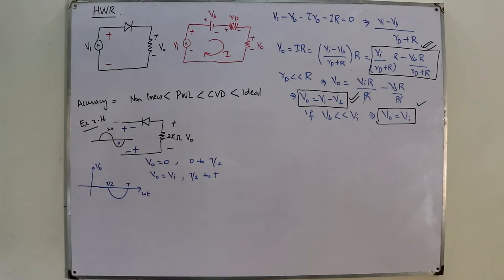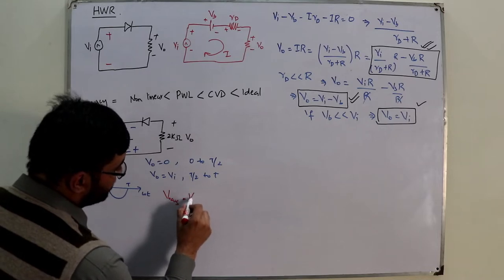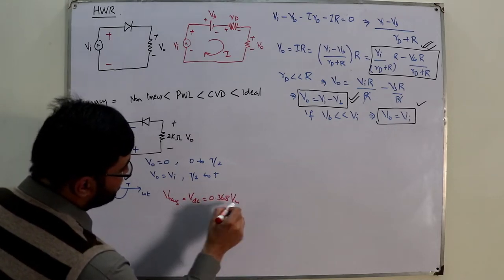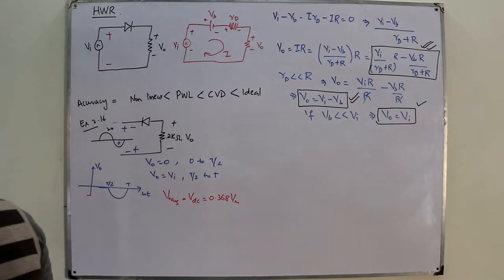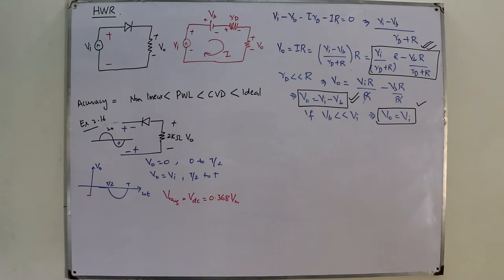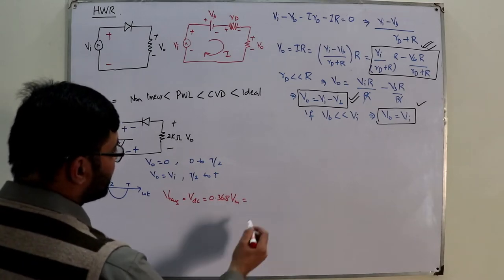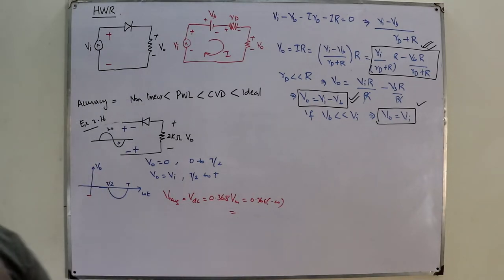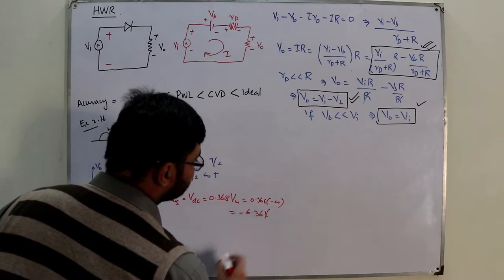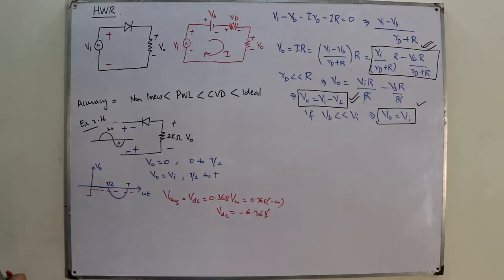The DC value is the average: V_dc equals 0.318 times V_m. Since the output is the negative half cycle, V_m is negative 20 volts. So V_dc equals 0.318 times negative 20, which gives negative 6.36 volts. This DC level lies in the negative region of the waveform.